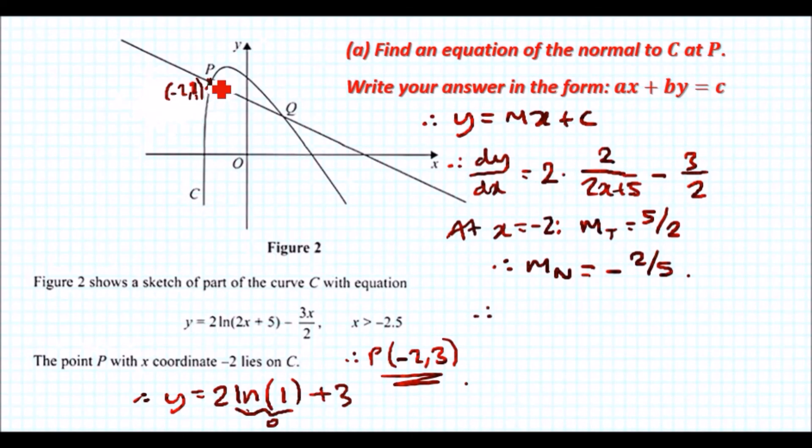Plugging in the coordinates: 3 = -2/5 times (-2) + c. This becomes 3 = 4/5 + c. Solving for c: c = 3 - 4/5, which gives us c = 11 over 5.